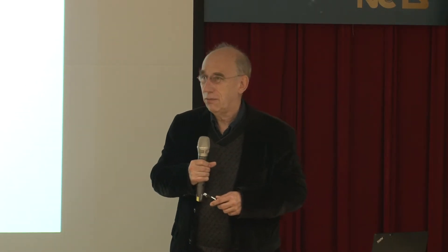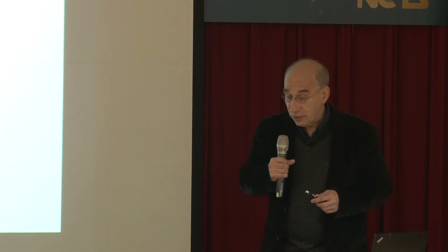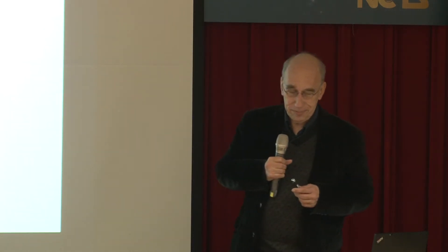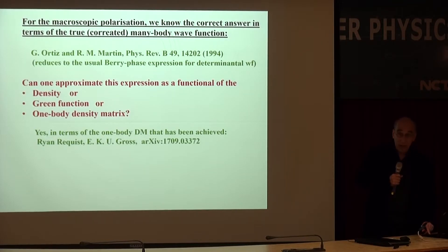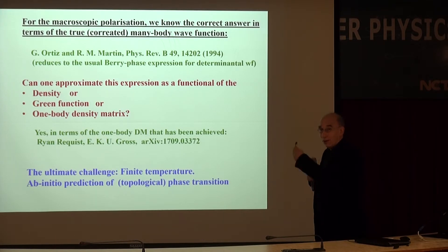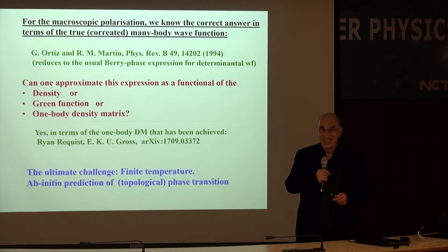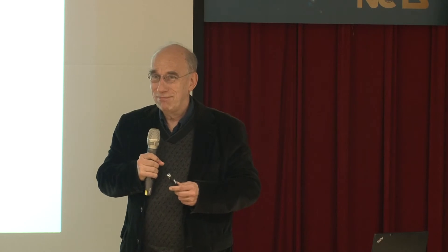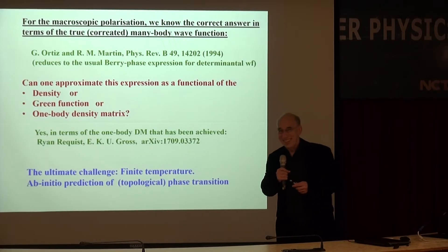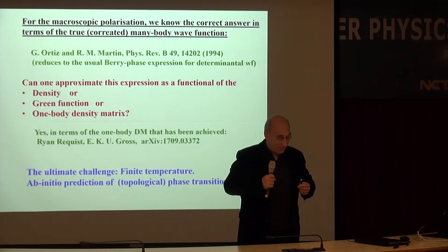This approximation is extremely accurate — deviations are per mill. So in this particular case, at least, it's possible. But there are other topological invariants and much more work to be done. What I would say is the ultimate challenge is to do all of this at finite temperature, so we would really be able to predict topological phase transitions — temperature driven, maybe — and make predictions of things like the critical temperature. So this is my outsider view of some aspects of this field.